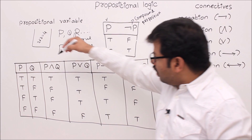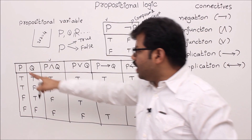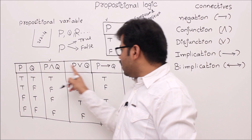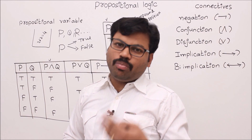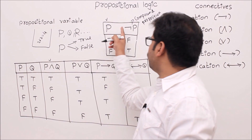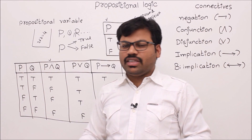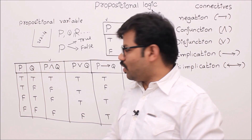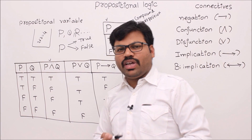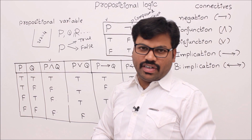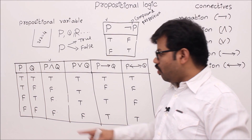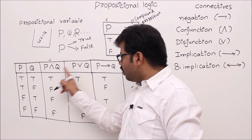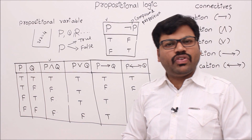Conjunction, disjunction, implication, and bi-implication are used to connect two propositions. For P and Q (conjunction): when P is true and Q is true, then P∧Q is true; in all other cases it is false. For P or Q (disjunction): it is false in only one case — when both P and Q are false. So P∧Q is true in only one case, and P∨Q is false in only one case.